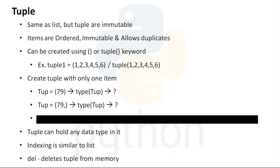In a tuple, items are ordered, immutable, and allow duplicates. In case of lists, items are ordered and mutable — we'll be able to change item objects — and it will also allow duplicates. Both share those two properties. The only difference is lists are mutable, meaning changeable, and tuples are immutable, meaning unchangeable.